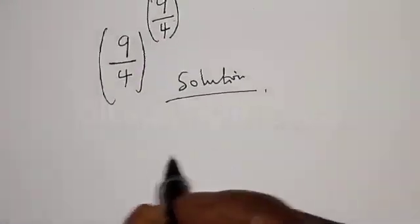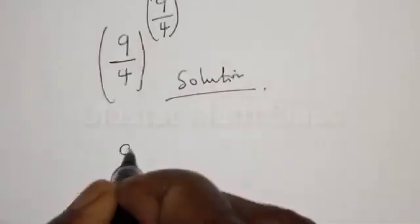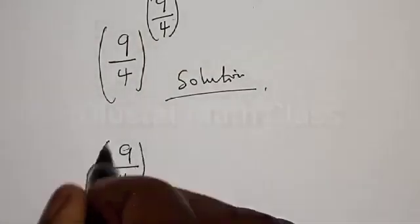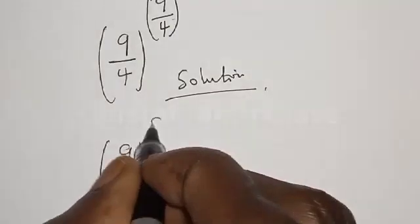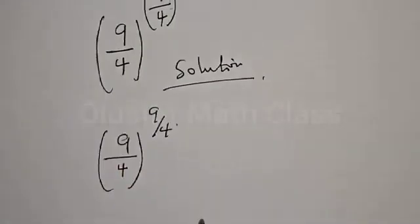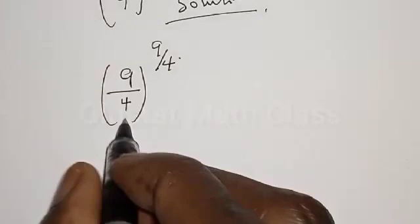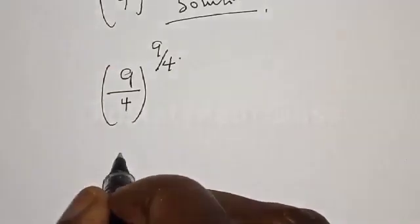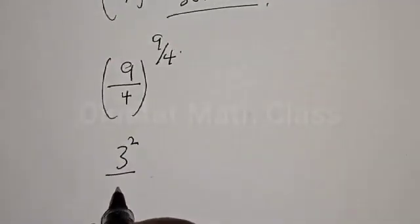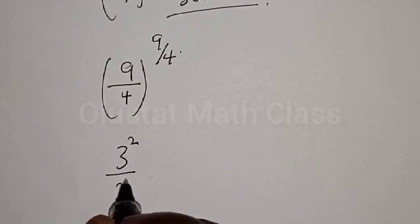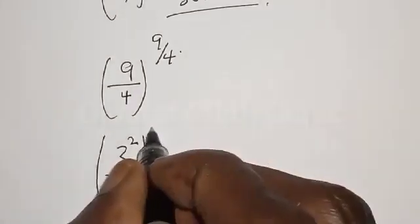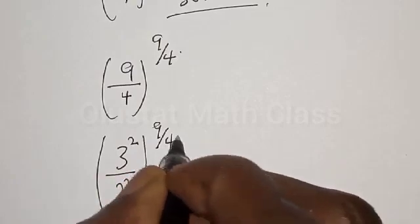We have 9 over 4, raised to the power of 9 divided by 4. This can be expressed as 3 squared divided by 2 squared, all raised to the power of 9 divided by 4.